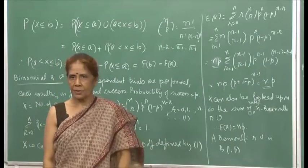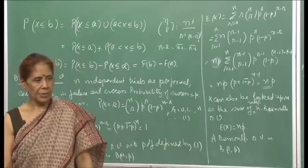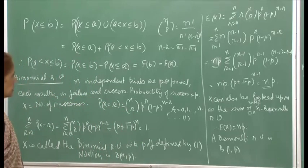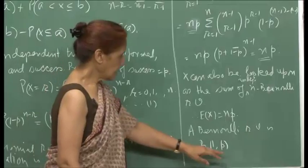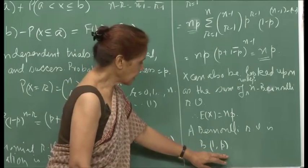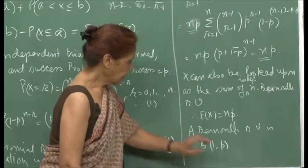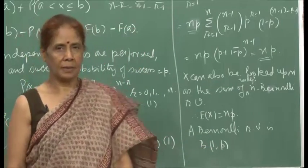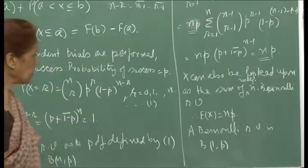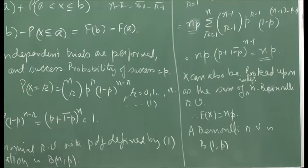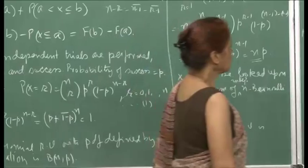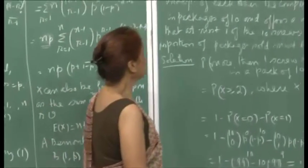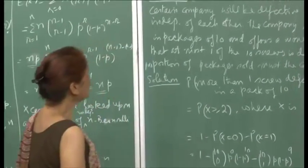We can also say that a Bernoulli random variable is B(1, p) — a binomial random variable with parameters 1 and p. The expected value of a Bernoulli is simply p, consistent with E[X] = np = 1·p.